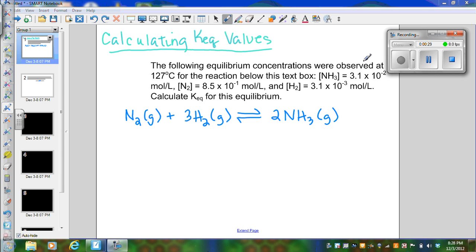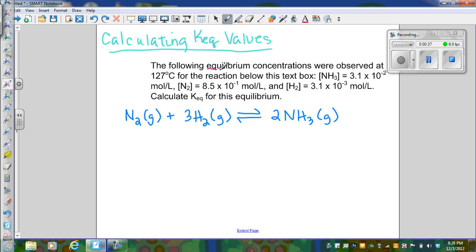Here's a question. If we read the question, the first thing that you want to notice is that it says the following equilibrium concentrations. This is telling you that these concentrations of ammonia, nitrogen, and hydrogen are all at equilibrium. That's important because if they're not, then we need to do the math differently. These are all equilibrium concentrations.